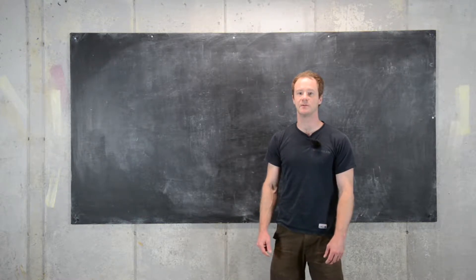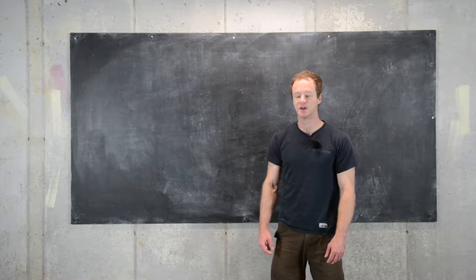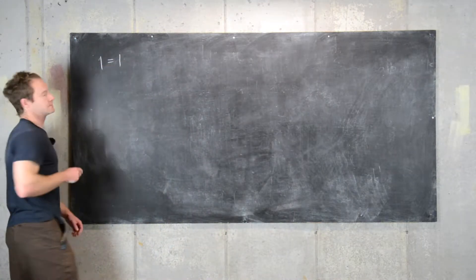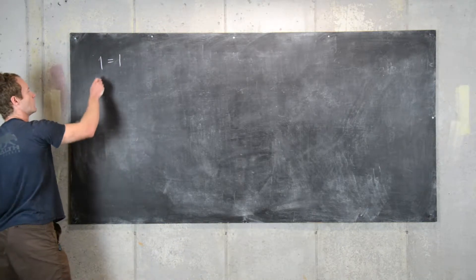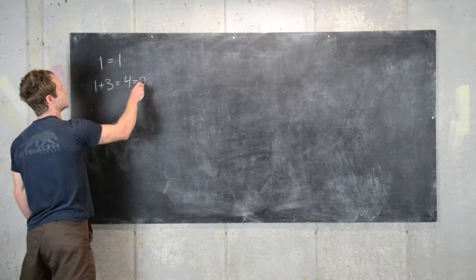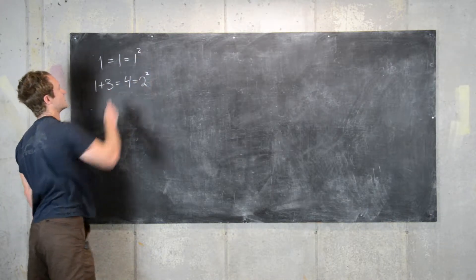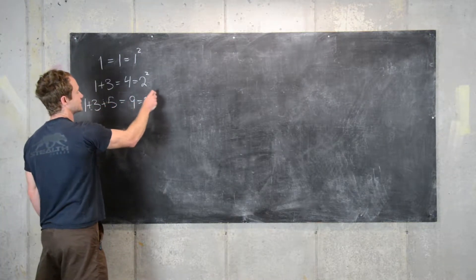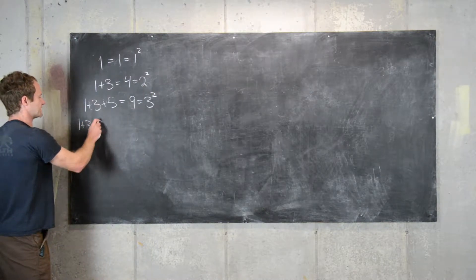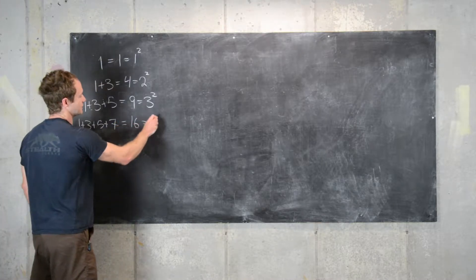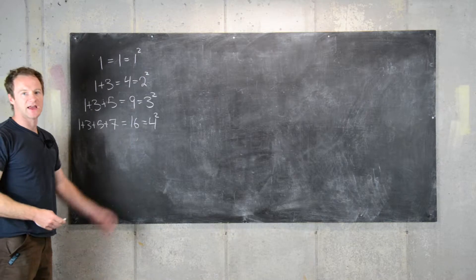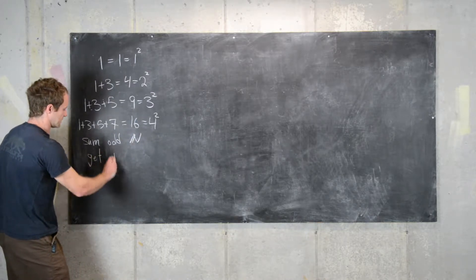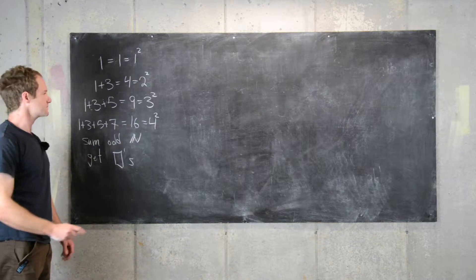In this video we want to prove a statement using the principle of mathematical induction. The statement is built off of the following observation: 1 equals 1 squared, 1 plus 3 equals 4 which equals 2 squared, 1 plus 3 plus 5 equals 9 which is 3 squared, and 1 plus 3 plus 5 plus 7 equals 16 which equals 4 squared. So it looks like if we sum odd natural numbers we get perfect squares.